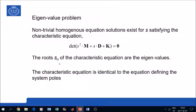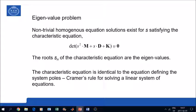Now one can show that this characteristic equation is actually identical to the equation that we used before to define the system poles. If you remember the equation where we set the denominator of the system transfer function equal to zero. So these are identical. This is actually according to Cramer's rule for solving linear systems equation. The denominator of the solution vector is actually the determinant of the system matrix.